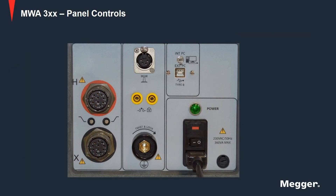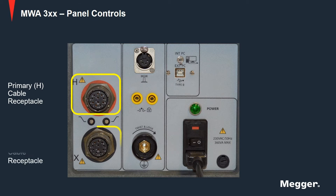Let's look at the MWA panel controls. First, you have the primary or H cable receptacle for connecting test leads to the high voltage winding of a transformer. Next, you have the secondary or X cable receptacle for connecting test leads to the low voltage winding of the transformer.